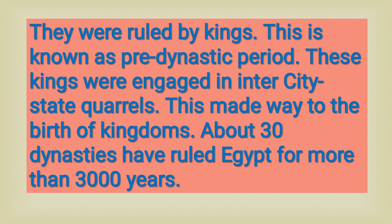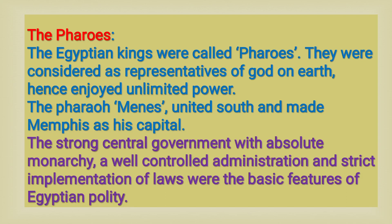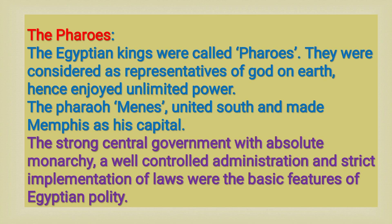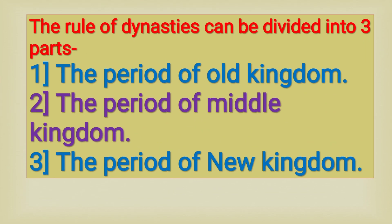These kings were engaged in inter-city-state quarrels, which made way for the birth of kingdoms. About 30 dynasties ruled Egypt for more than 3000 years. The Egyptian kings were called Pharaohs, and they were considered as representatives of God on earth, hence enjoying unlimited powers. The Pharaoh Menes united south and north Egypt and made Memphis his capital. Strong central government with absolute monarchy, well-controlled administration and strict implementation of laws were basic features of Egyptian society.